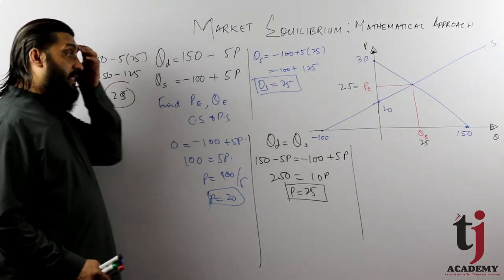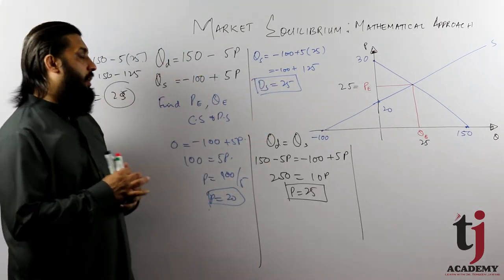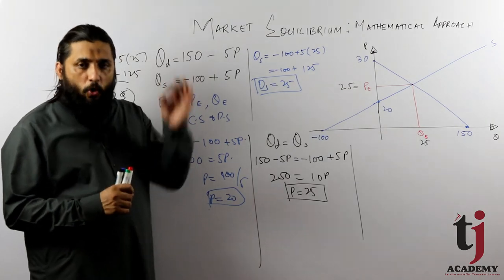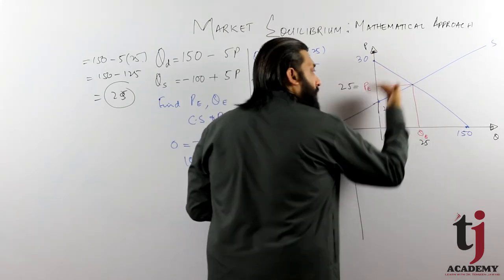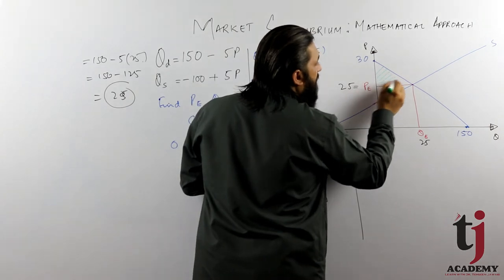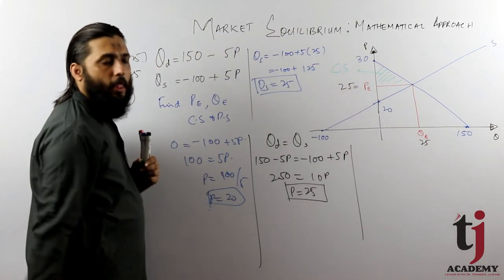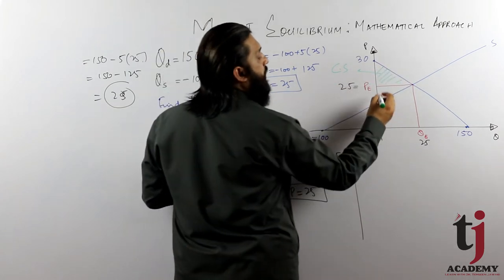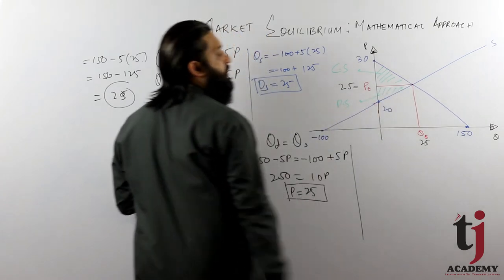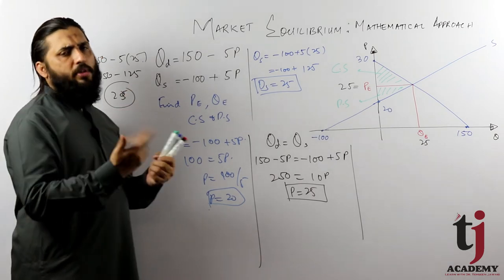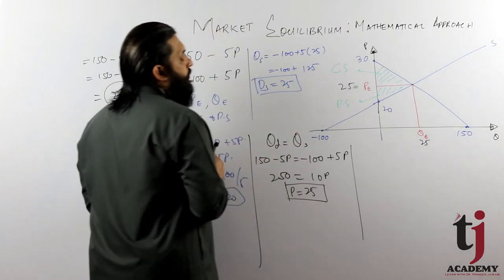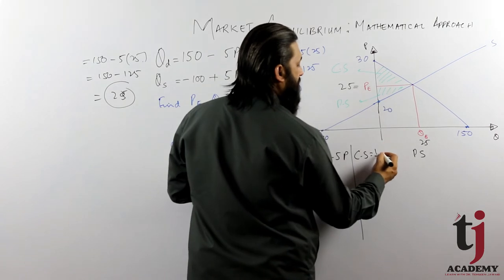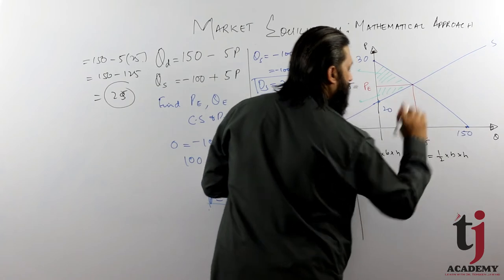अब हमने देखना है consumer and producer surplus। Graphical definition ध्यान में रखें क्योंकि हम graphical analysis करना है। Consumer surplus के लिए: area below the demand curve and above the price line — यह ऊपर वाला triangle consumer surplus show कर रहा है। Producer surplus के लिए: area above the supply curve and below the price line — यह नीचे वाला triangle producer surplus है।